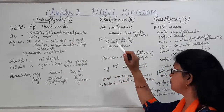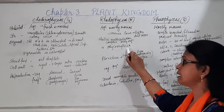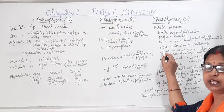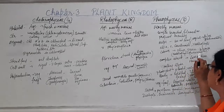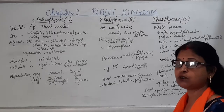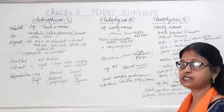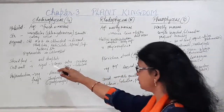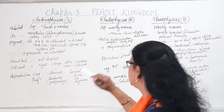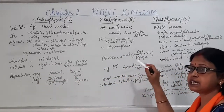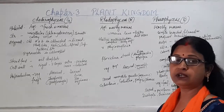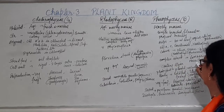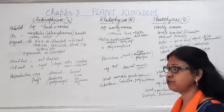In Rhodophyceae, the pigment is R-phycoerythrin, which gives it a red color. The pigment in Phaeophyceae is chlorophyll A, C, fucoxanthin, and xanthophylls. Due to these different pigments, the color may vary from species to species. The stored food material in Phaeophyceae is in the form of oil droplets, mannitol, and laminarin. In Rhodophyceae, the stored food is floridean starch, similar to amylopectin or glycogen of complex organisms.